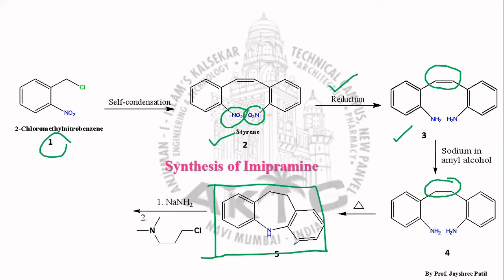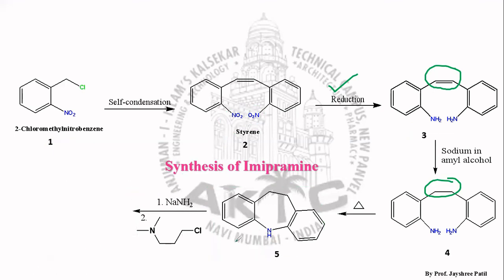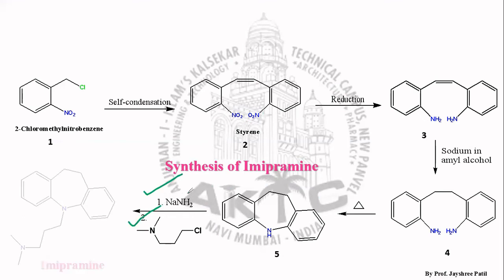Once the tricyclic pharmacophore has been generated, it is acted upon by the base NaNH₂ and then by the side chain, that is chloropropyl dimethylamine. The sodamide acts as a base, accepting the proton to first form the sodium salt, which is then acted upon by this side chain, resulting in the elimination of HCl. Structure 5 is first acted upon by the base, which accepts the proton, then by the required side chain, and ultimately we get imipramine at the central nitrogen. The side chain is 3 carbons along with a dimethylamino group.